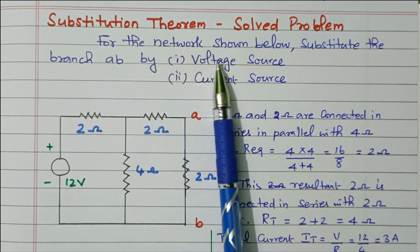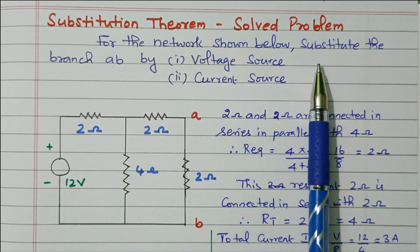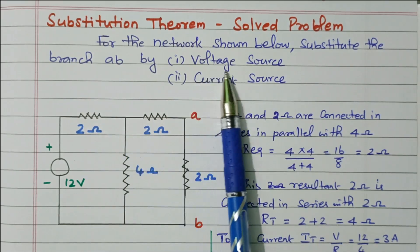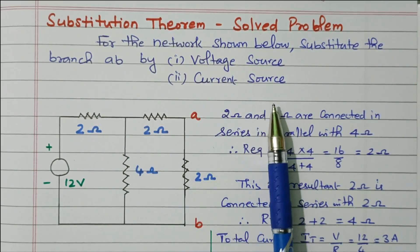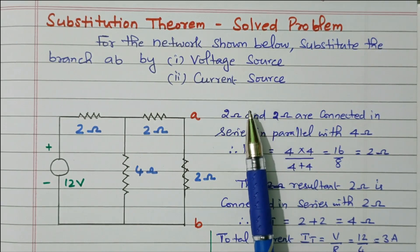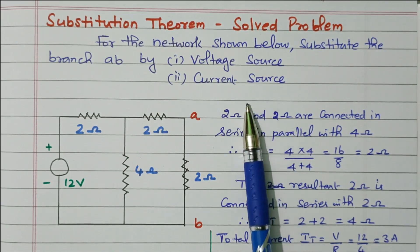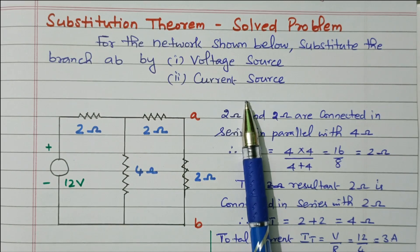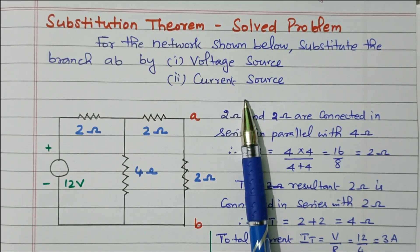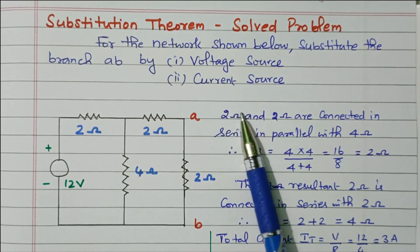For the network shown below, substitute the branch AB by a voltage source or current source. We know that the substitution theorem means any branch can be replaced by some other branch by maintaining the voltage and current. We can replace with other elements, but we should maintain the current and voltage.